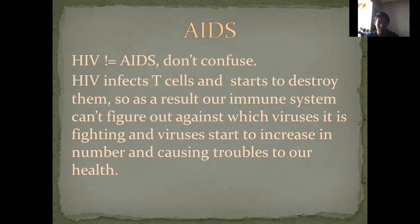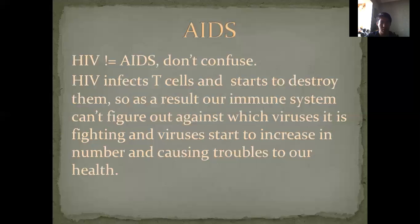HIV infects people and it starts to destroy and reproduce in T-cells. In our immune system, T-cells help to figure out against which bacteria and viruses we are fighting — what our immune system should fight.